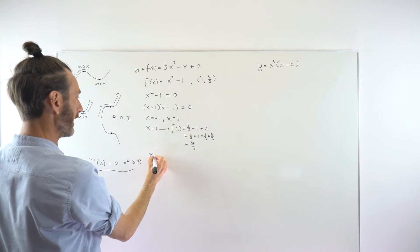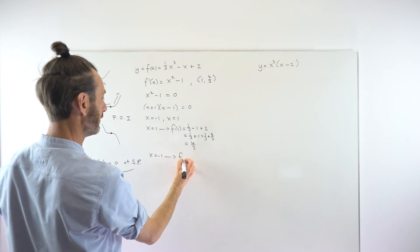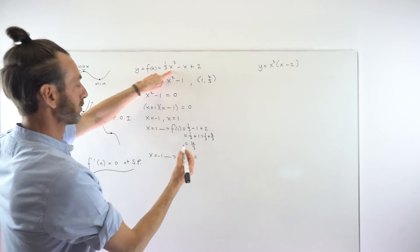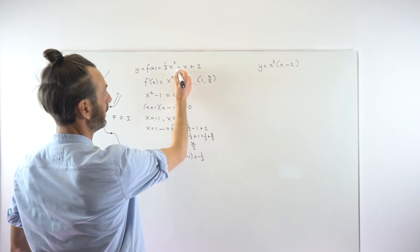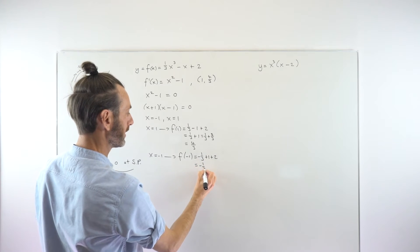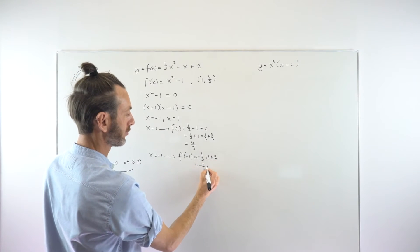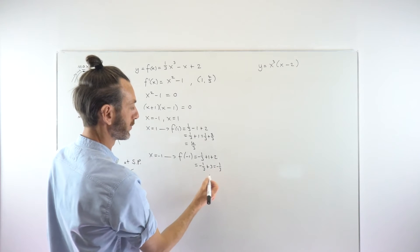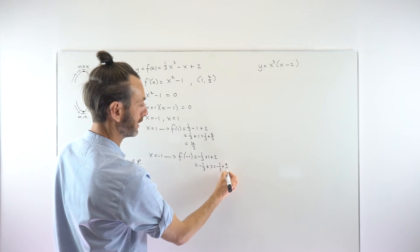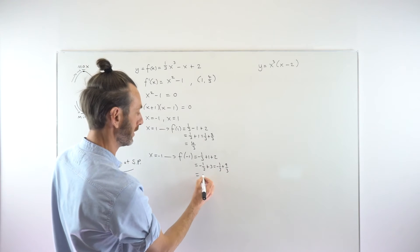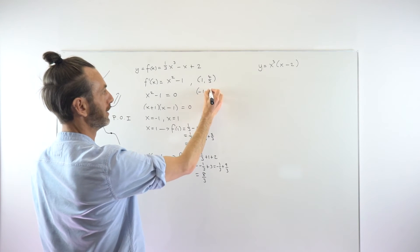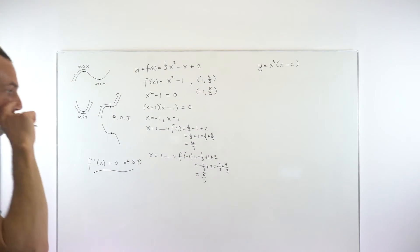When x equals minus one: f(−1) = one-third times (−1) cubed minus (−1) plus two = minus one-third plus one plus two. Converting the three to nine over three, we get minus one plus nine over three, which is eight over three. So our second stationary point is at (−1, 8/3). Those are our two stationary points.